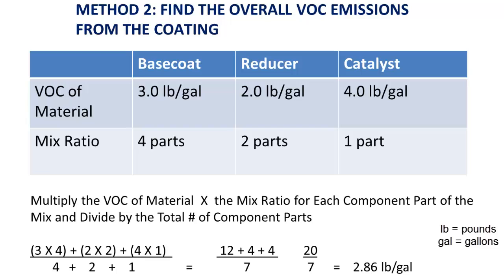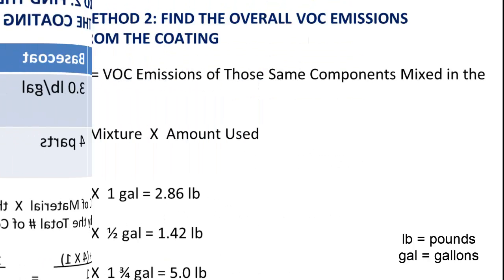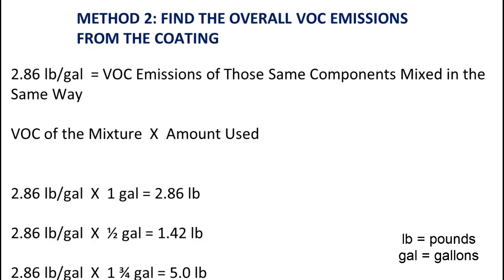The second method is useful if you know the mix ratio of the component parts. Multiply the VOC of material by the mix ratio for each component part and add together, then divide by the total number of component parts. You will get the overall VOC emissions from the coating when the components are mixed in the same ratio. This number is useful when you always mix the coating the same but perhaps use different amounts of the coating from day to day. As you can see from these examples, 2.86 pounds per gallon will always stay the same if these products are mixed in that ratio. You then multiply by the amount applied of the total mixture to get the VOC emissions.